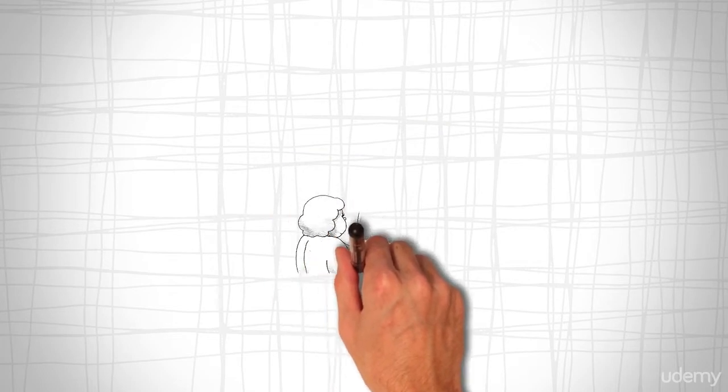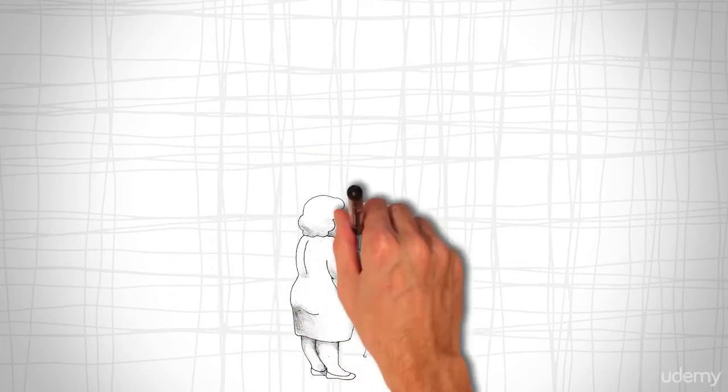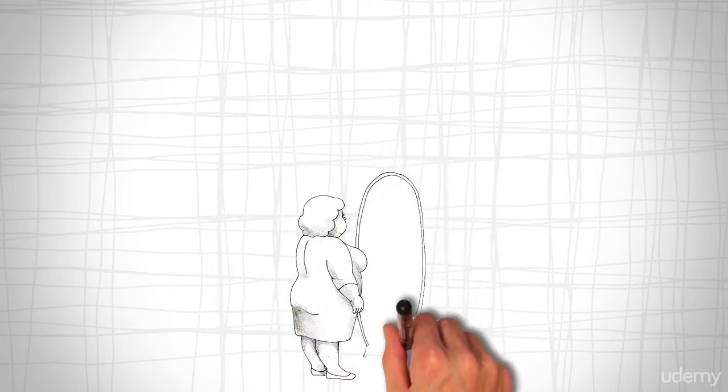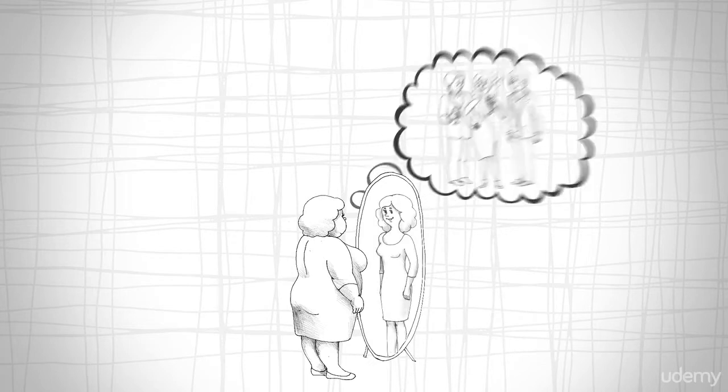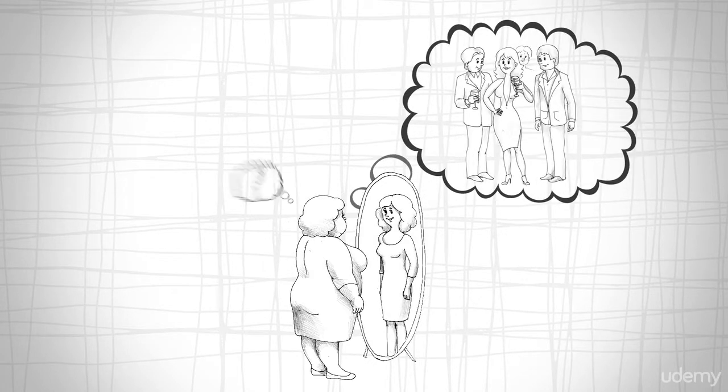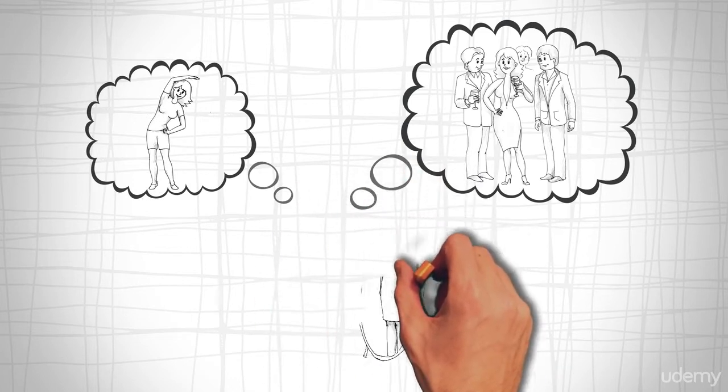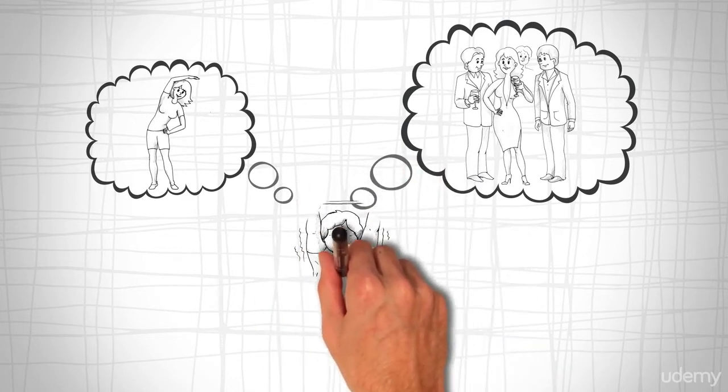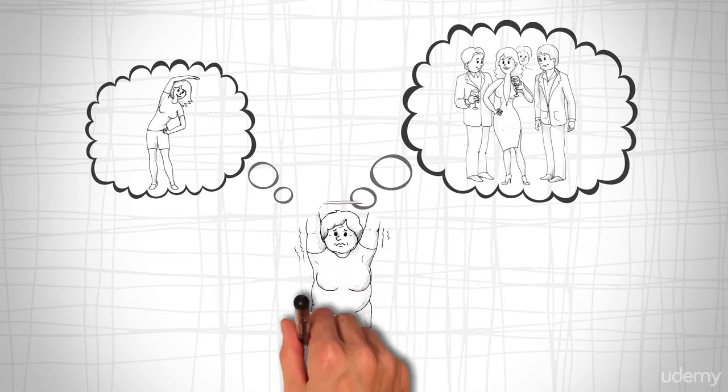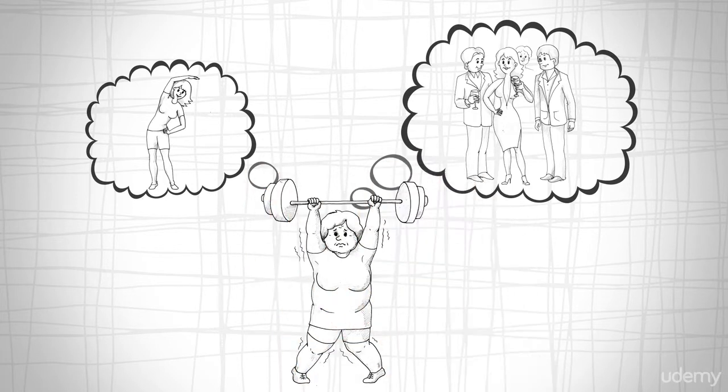False Hope Syndrome refers to a behavior of setting unrealistic expectations about the speed, amount, ease, and consequences of the changes you want to make in your life. People who fall victim to the syndrome make impossible goals when attempting to change themselves. They quickly become frustrated and quit.